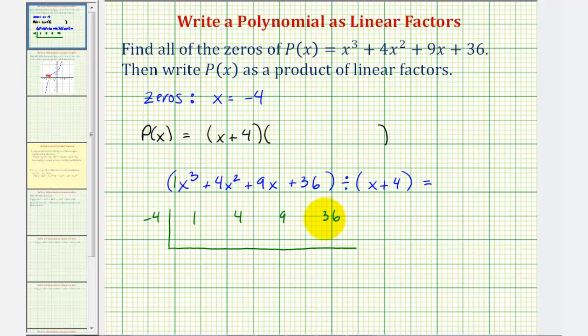And now to perform this synthetic division, we bring down this first term, one, and start multiplying by -4. -4 times 1 is -4, and then we add, that would be 0. -4 times 0 is 0, and we add, that's 9. -4 times 9 is -36, and we add, and that's 0. This last zero is important because this represents the remainder, which should be zero since we know x + 4 should be a factor, and this verifies that it is.